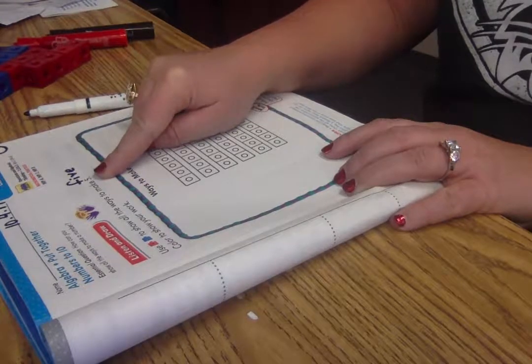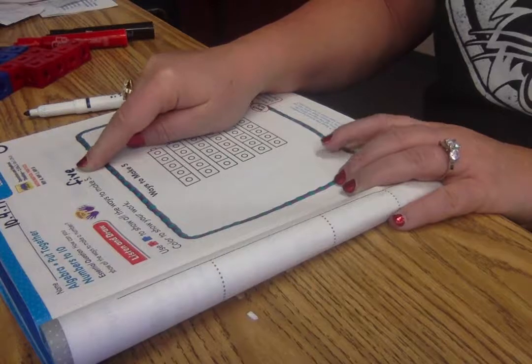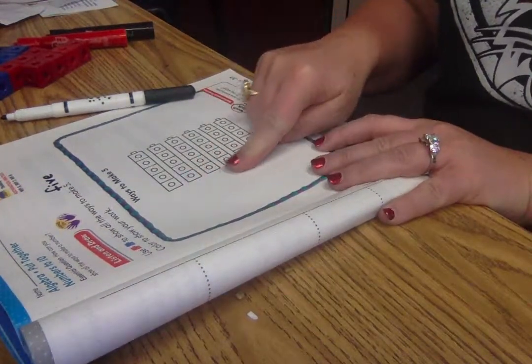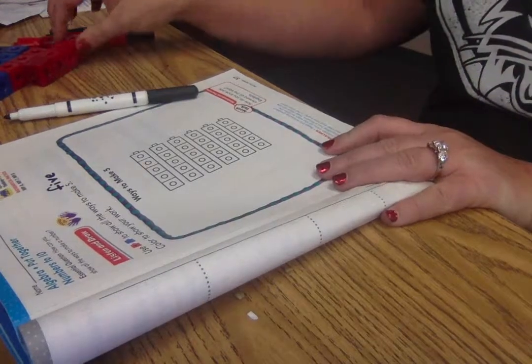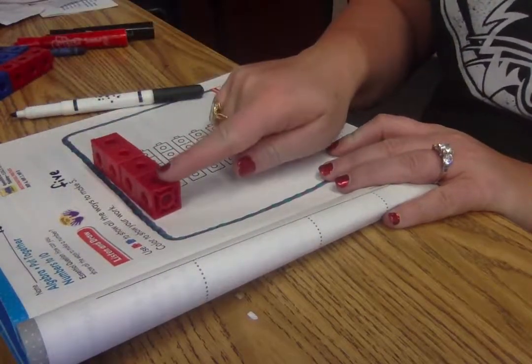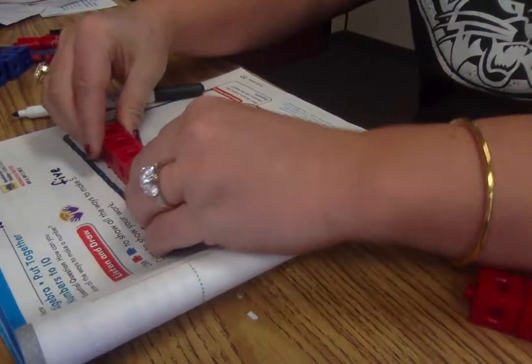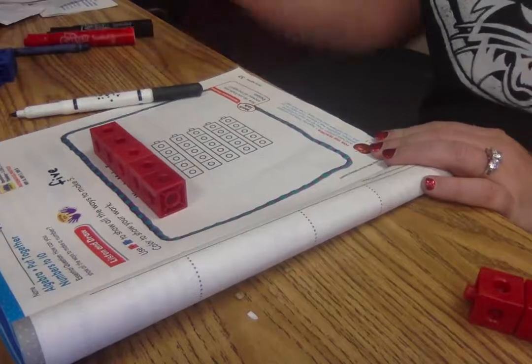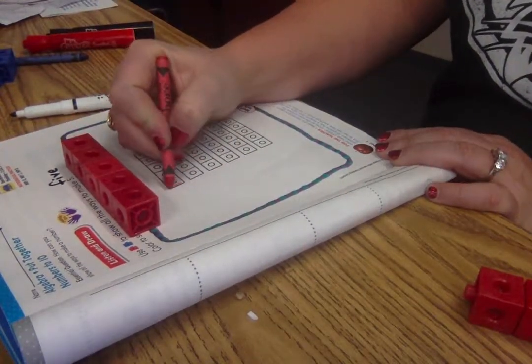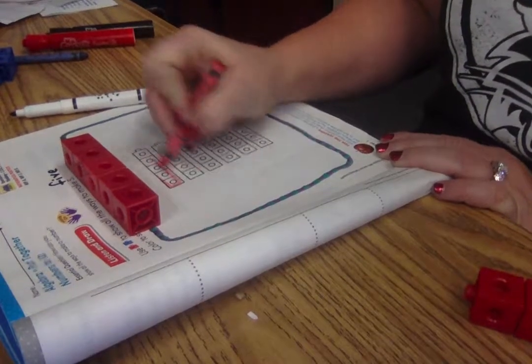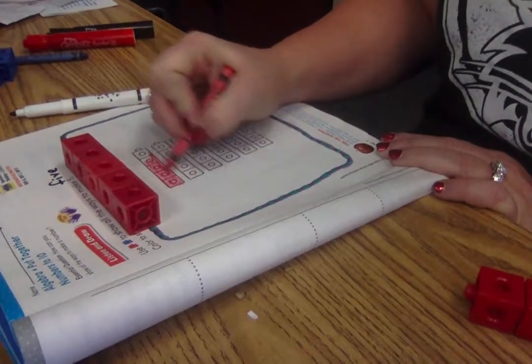So already you've shown me the number five and you've shown me the word five. And we are going to be showing the number five some more ways. So the first way is I have one, two, three, four, five red cubes. Please color with your crayon five red cubes. So all you're doing is coloring those five within the lines as best you can. And you're showing five.